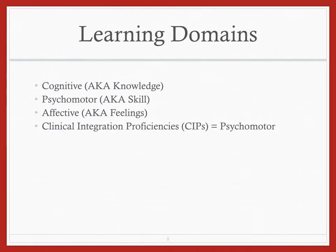Another thing we need to keep in mind is learning domains — this is very important in physical education and athletic training. Previous versions of athletic training competencies used three domains: cognitive, psychomotor, and affective. Cognitive is your mind — the knowledge base — which is the term used in the new competencies. Psychomotor is doing a skill, such as shooting a basketball in PE, or taping and clinical assessment skills in athletic training. So we've got knowledge and skills.